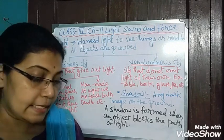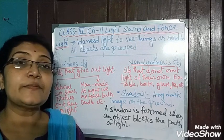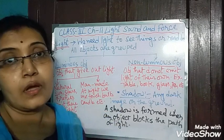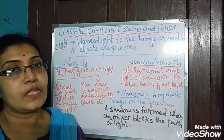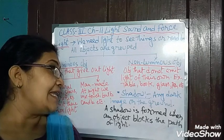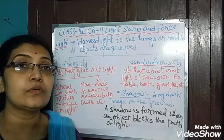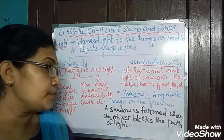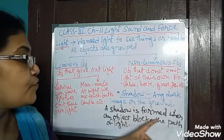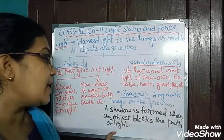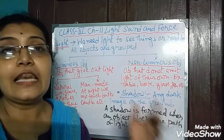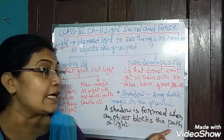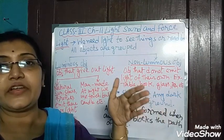Now we come to the next point of this chapter — shadow. What is a shadow? A shadow is any dark image formed on the ground. A shadow is formed when an object blocks the path of light. Light always travels in a straight path and does not require any medium to travel.